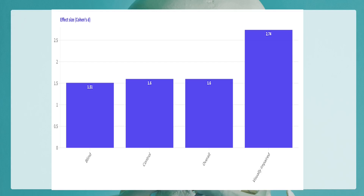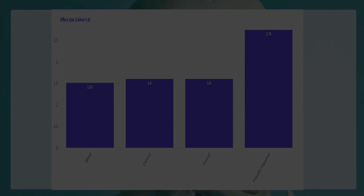When we delve into effect sizes, utilizing Cohen's d as our measure, the data speaks volumes. The blind group shows a considerable effect at 1.51; the control group follows closely with an effect size of 1.6. However, the visually impaired group stands out with a profound effect size of 2.74, suggesting an extraordinary level of improvement.